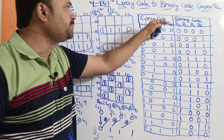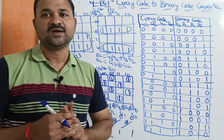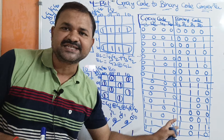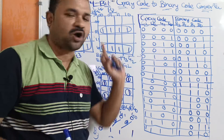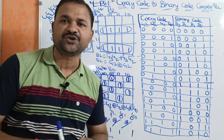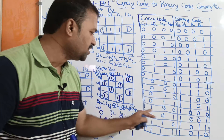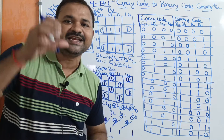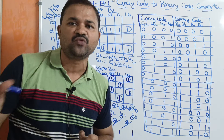First let us see the input column, that is the grey code. Totally we have written 16 grey codes. For our convenience, all 16 grey codes are written in 8421 notation only. So 0 means all 0s, 1 means 0001, 2 means 0010, and so on for all 16 4-bit grey codes written in 8421 notation format.